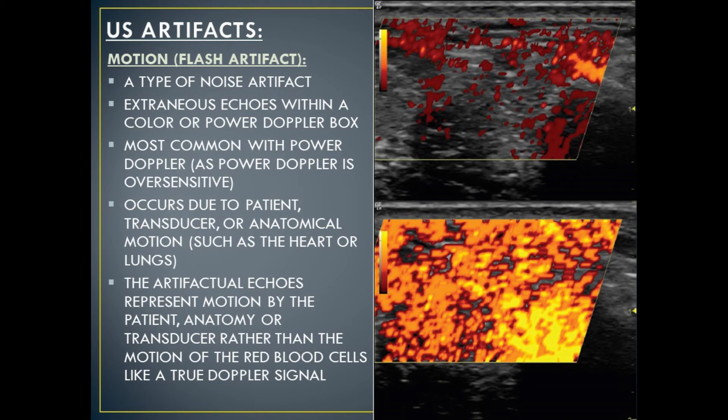The next type of ultrasound Doppler artifact is known as motion or flash artifact. This is a type of noise artifact — extraneous echoes within a color or power Doppler box. This is most commonly seen with power Doppler, as power Doppler is oversensitive. This occurs due to the patient, the transducer, or anatomical motion, such as movement of the heart or the lungs. The artifactual echoes represent motion by the patient, by anatomy, or by the transducer, rather than the motion of the red blood cells, which is a true Doppler signal.